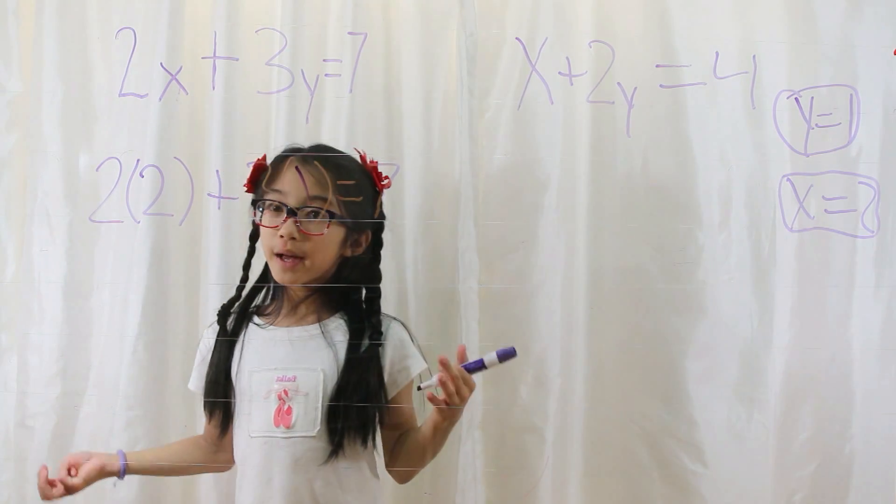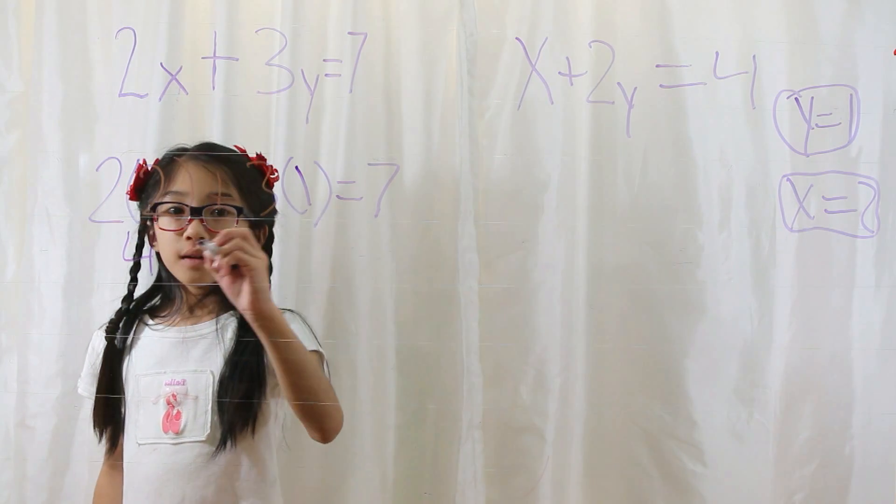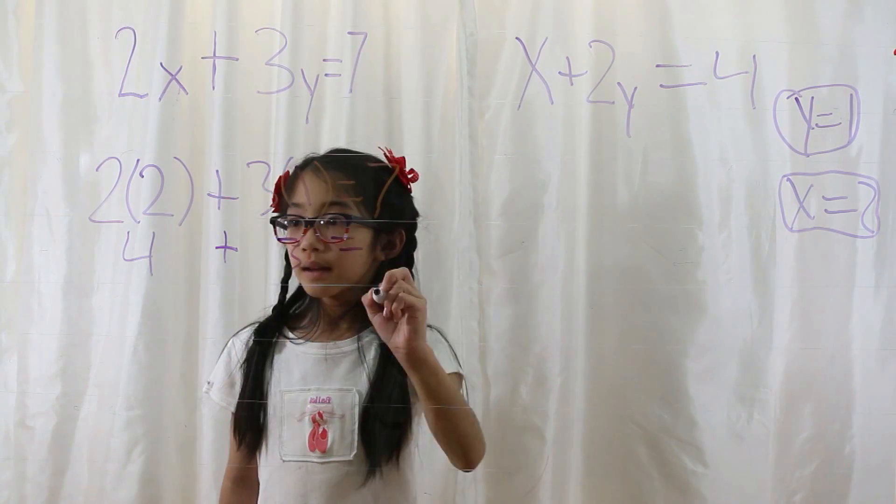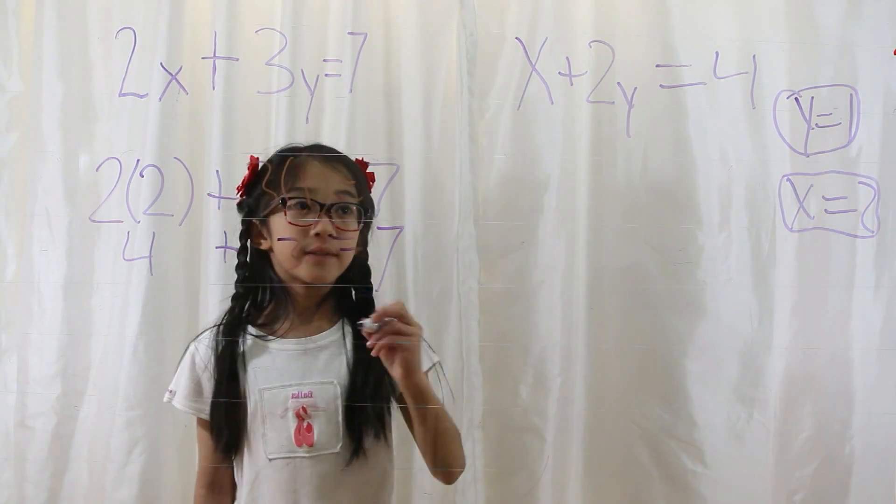Now you multiply it out. 2 times 2 is 4, plus 3 times 1 is 3, equals 7. 4 plus 3 is 7. Check!